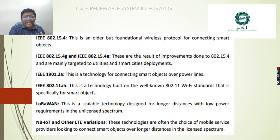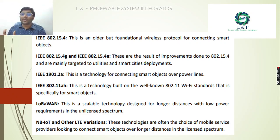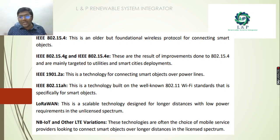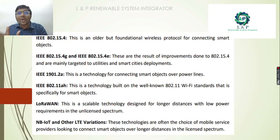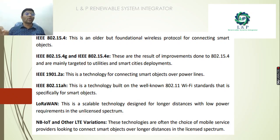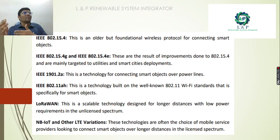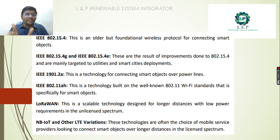Next are NB-IoT and other LTE variations — technologies we often use in mobile services. You may have heard about different spectrums: 2G, 3G, 4G, and now 5G. These are licensed spectrum technologies based on different bandwidths and spectrums. These are some examples of these protocols.